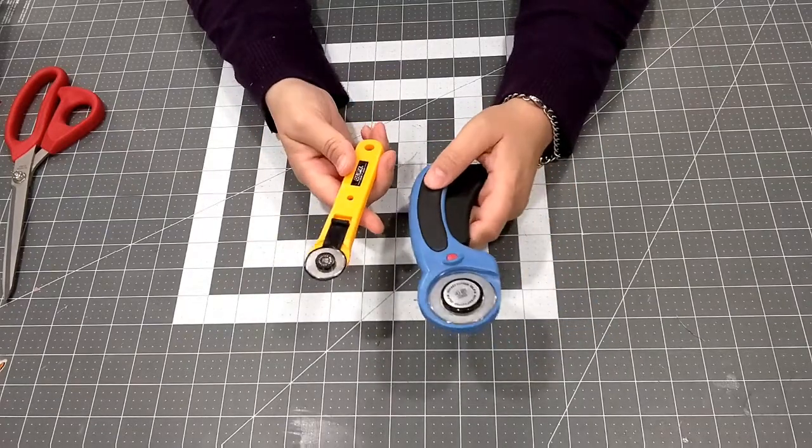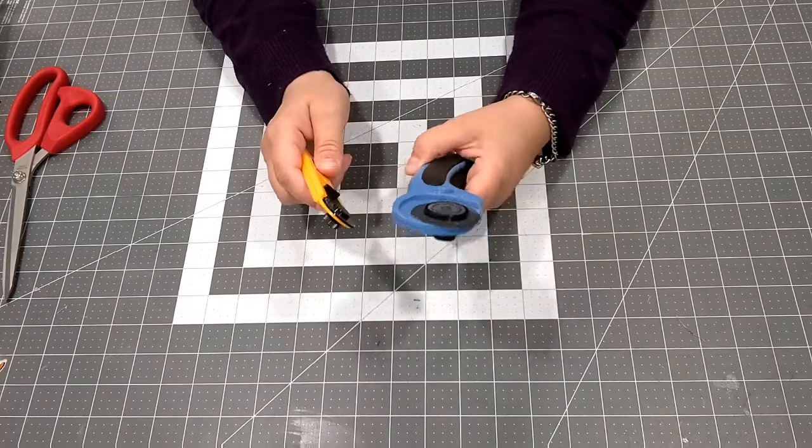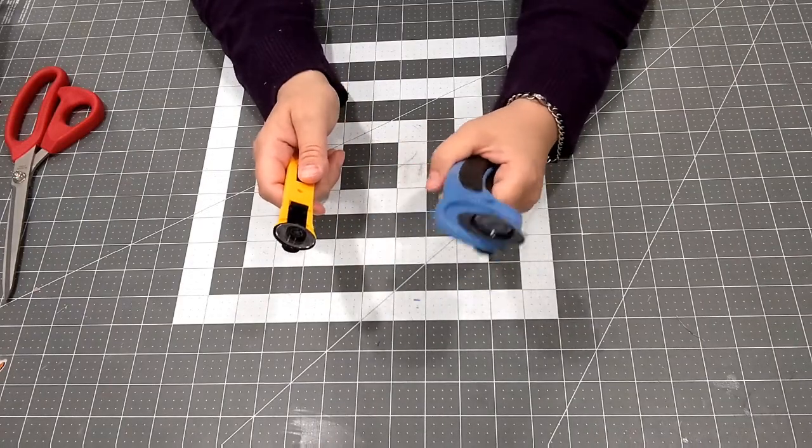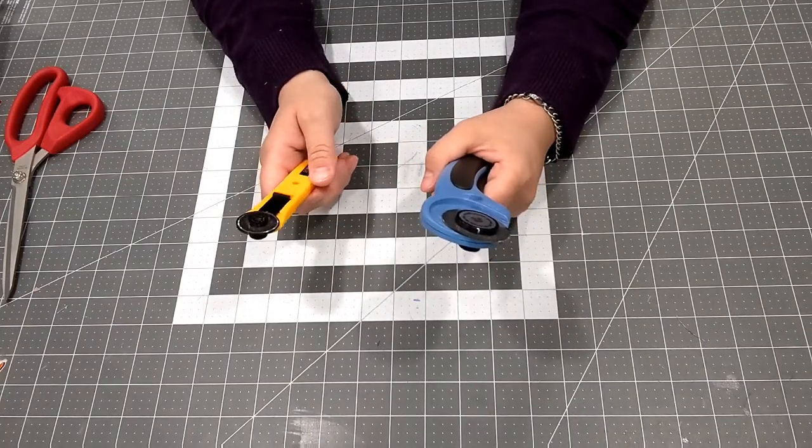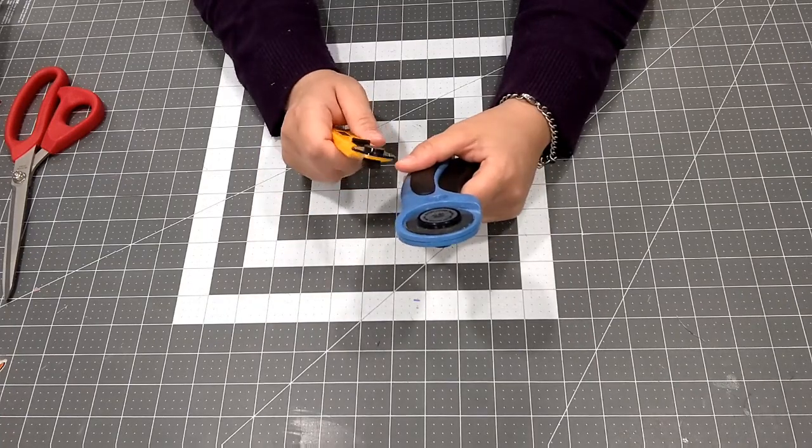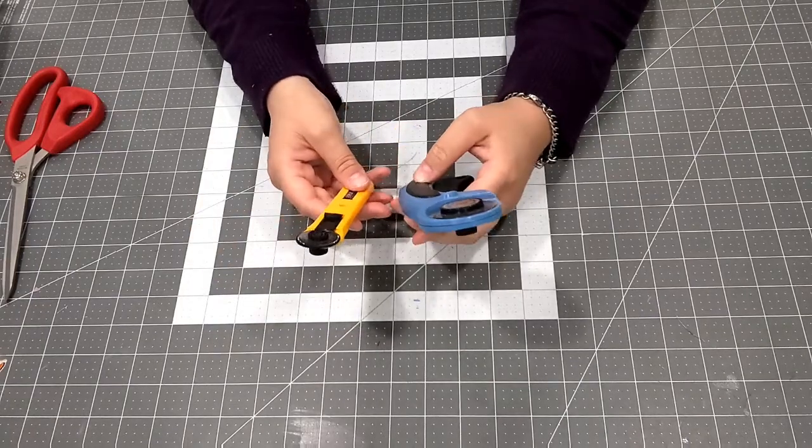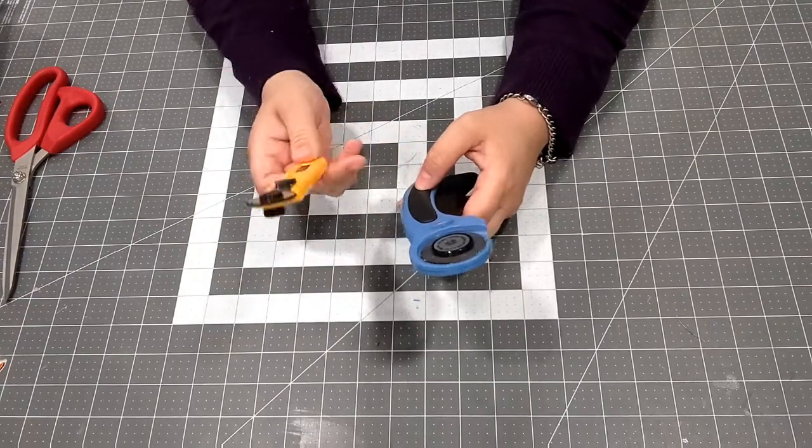Also, you don't need to use pins—you can use pattern weights, which is kind of nice because you're not piercing your fabric. You will need a self-healing mat like you see under me if you're using a rotary cutter, so you don't cut into your table. You can get those at Michaels, Amazon, or fabric shops.